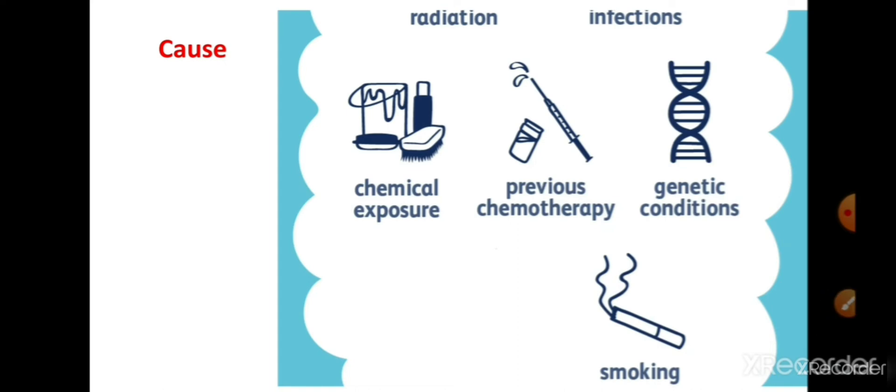Causes of leukemia के बहुत से reasons हैं जैसे कि radiation, infection, chemical exposure। अगर patient ने पहले कभी chemotherapy ली है तो यह भी एक reason बन सकता है। इसके अलावा genetic conditions भी हैं — यह genetically भी transfer हो सकता है। अगर कोई person बहुत excessive मात्रा में smoking करता है तो उसे भी यह cancer होने के chances बढ़ जाते हैं।